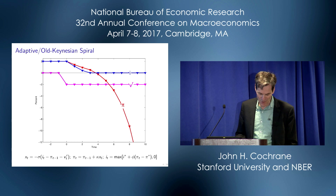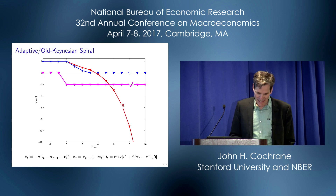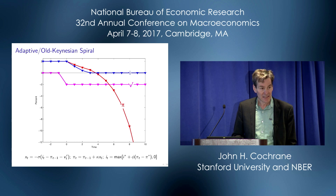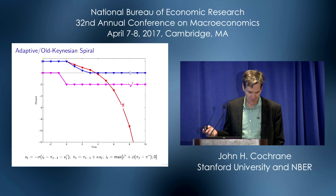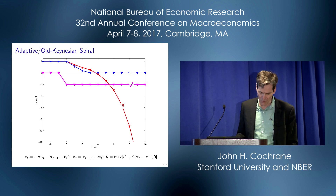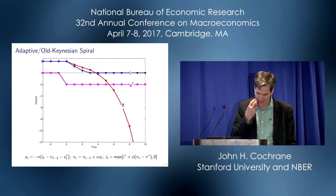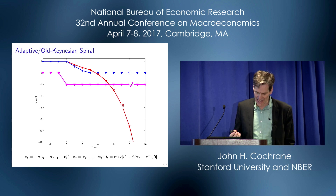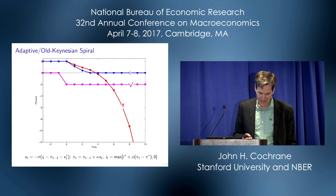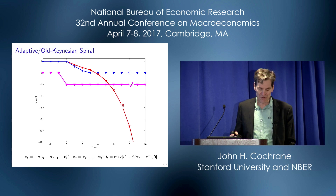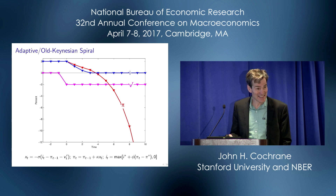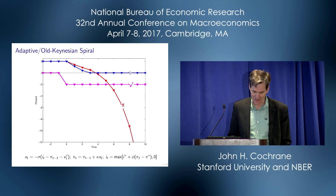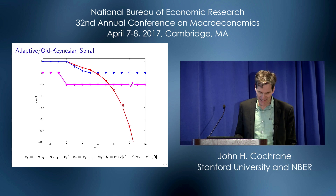Here's a more serious illustration. This is a simple adaptive expectations model with a static IS curve, a Phillips curve, and a Taylor rule with a zero bound constraint. When you hit this with an IS shock, inflation in red starts to go down. Interest rates in blue start to go down faster following a Taylor rule to stop the disinflation. But then interest rates hit zero and the deflation spirals out of control.